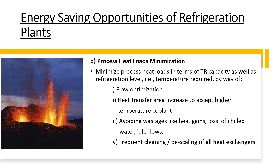The next one is process heat load minimization. Minimize process heat loads in terms of TR capacity as well as refrigeration level. This includes flow optimization, heat transfer area increase to accept higher temperatures, avoiding heat gains, loss of chilled water, ideal flows, and frequent cleaning and de-scaling of all heat exchangers.